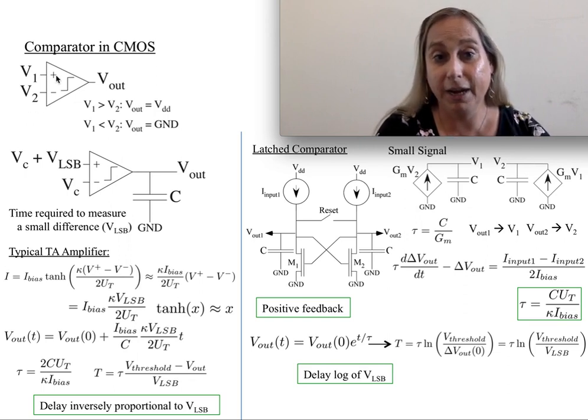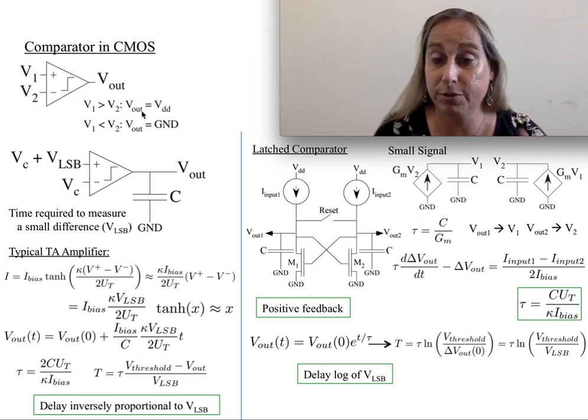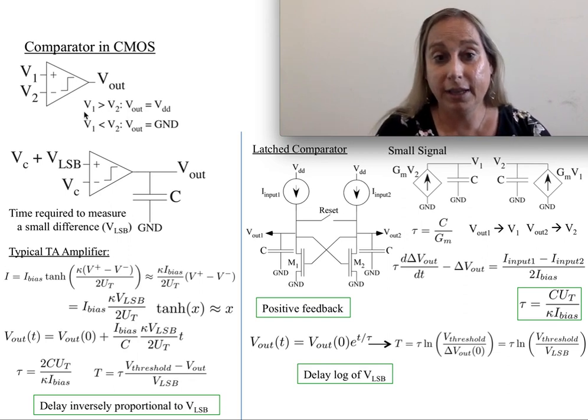then the positive terminal means that the output will go to the highest power supply rail. And if it is actually less than the other one, then I would expect it to be ground.